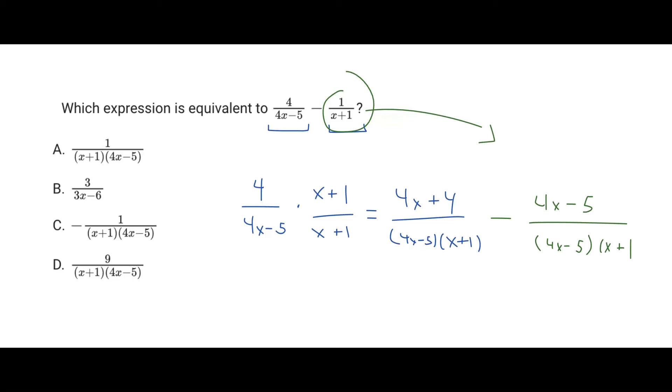And so now we can also just look at this entire thing over each other. So we have 4x plus 4 minus 4x minus 5, but they have the same denominator. So in reality, this can just be rewritten as 4x plus 4 minus 4x minus 5 over all of this. So let's write it out again. Kind of tedious, but you got to do what you got to do.